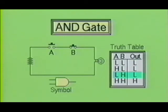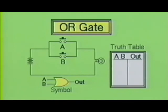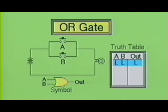Now let's look at the OR gate. Here we see the OR gate being represented by a simple circuit consisting of a battery, two switches, and a lamp. This circuit is different from the one previously shown in that switches A and B are now in parallel. Also shown in this illustration is the symbol for the OR gate, as well as the truth table. When neither switch is pressed, the lamp will not turn on. The truth table shows a low on A and a low on B produces a low at the output.